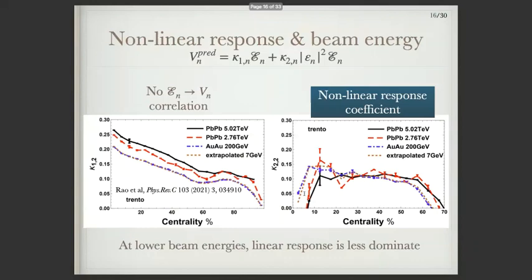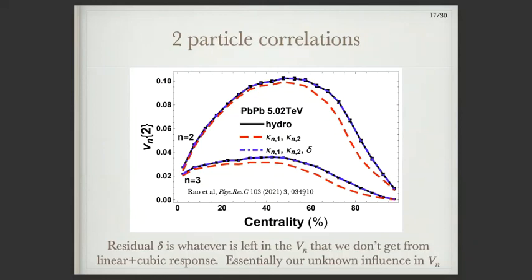If I take what I get from both linear and nonlinear response and try to reproduce my flow harmonics, the red lines are what I get from linear plus nonlinear response, and you can see some residual delta remaining — because there are other types of eccentricities or something else giving me the final flow harmonic that I can't encapsulate with this approach. In central collisions for both V2 and V3, I can get the vast majority of the flow harmonic, but after mid-central and peripheral, we start getting differences.